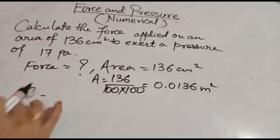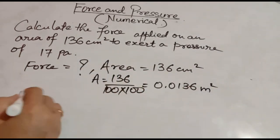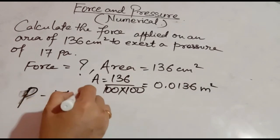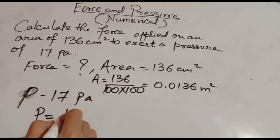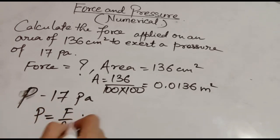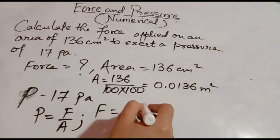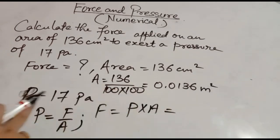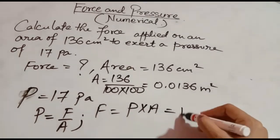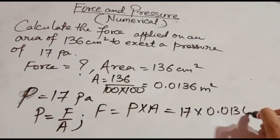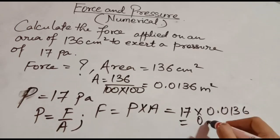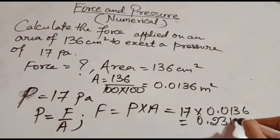Pressure is equal to 17 Pascal. What is the formula for finding force? We know that pressure is equal to force by area, so force is equal to pressure into area. The value of pressure is 17 Pascal, so force will be 17 into 0.0136. Calculate: 0.2312 Newton.